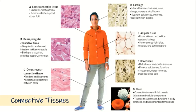Last, we have blood, which is actually a fluid connective tissue with a fluid matrix called plasma and other cellular components. You have the RBCs or red blood cells, also known as erythrocytes, white blood cells or leukocytes, and plasma. They transport substances, function in body defenses, and help maintain body temperature.